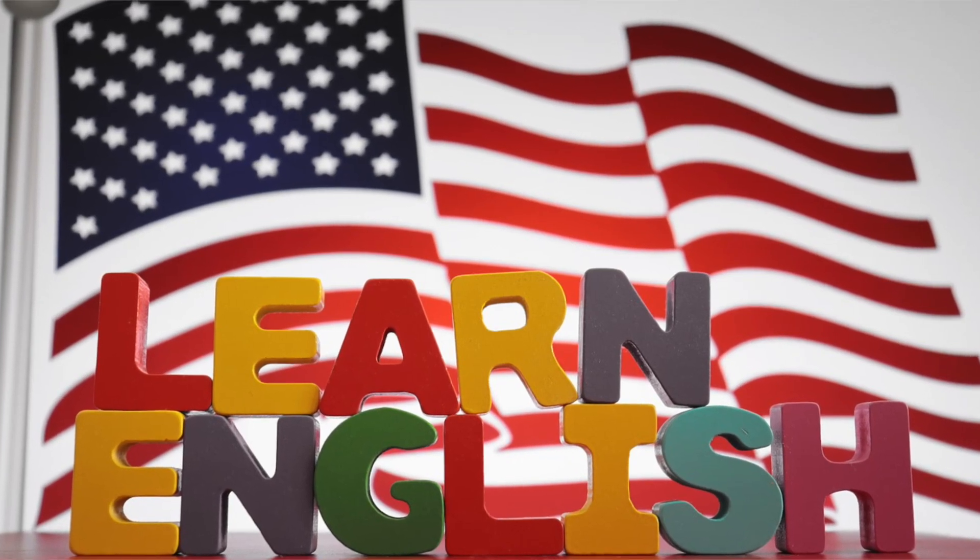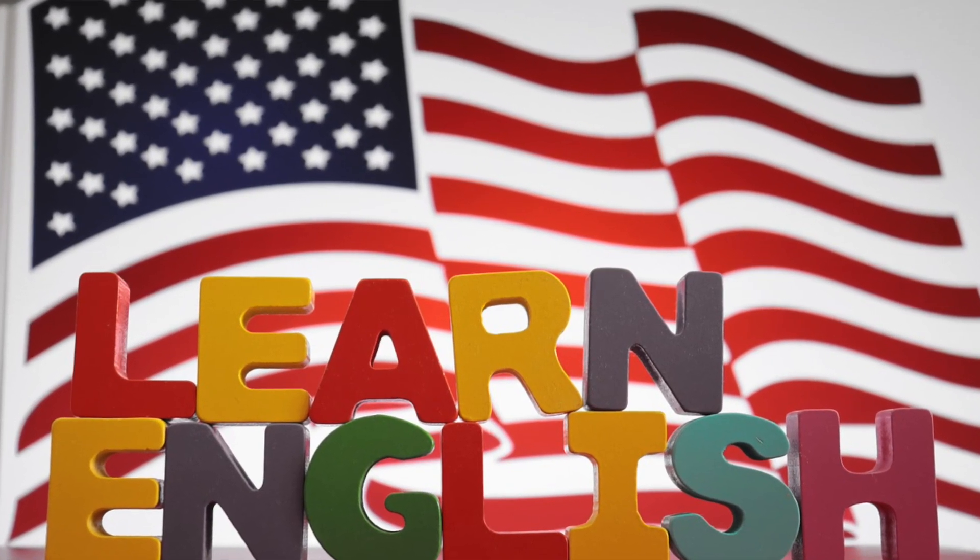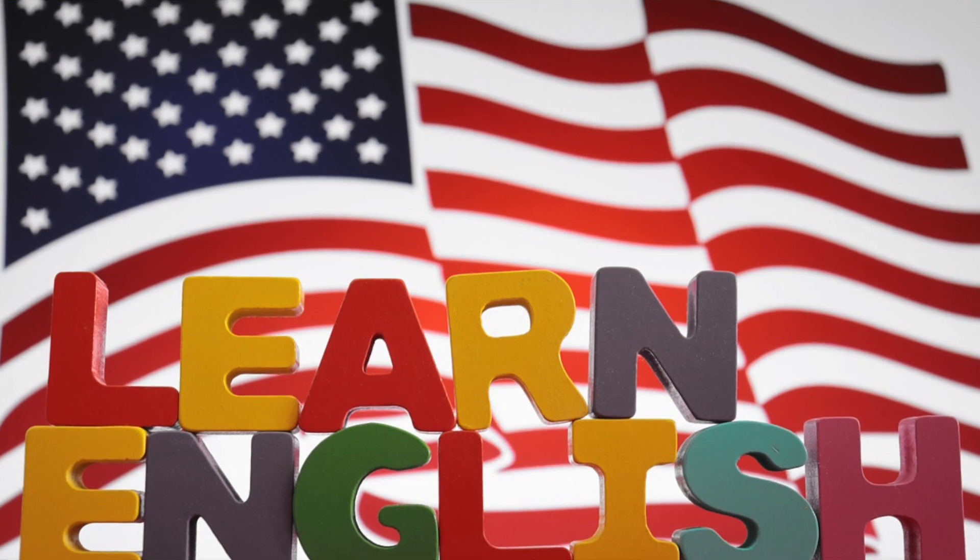What can a person in an A1 English level do? A person with an A1 English level typically possesses basic or beginner proficiency in the English language. At this level, they are generally able to perform the following tasks.